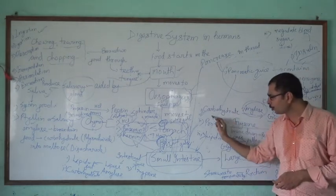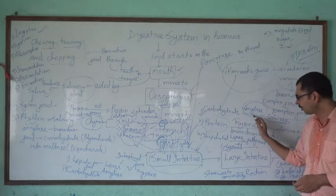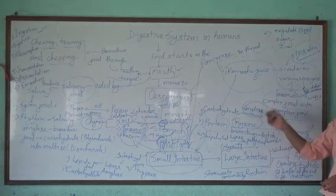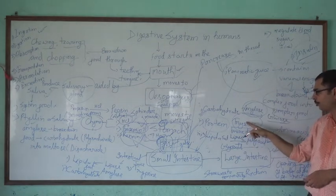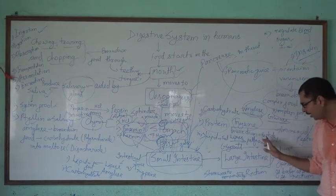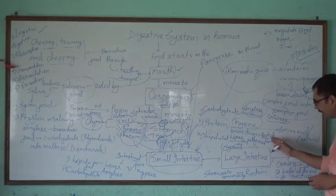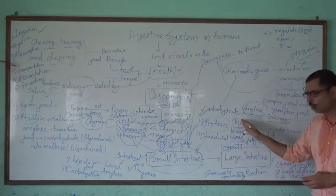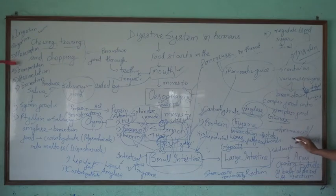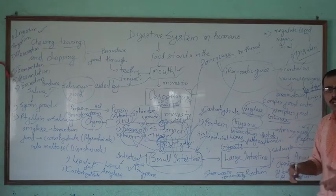Similarly, protein is made up of amino acids. The enzymes that act on proteins are pepsin and erepsin. Pepsin acts in the stomach and erepsin acts in the small intestine. They will break down peptide bonds which connect the amino acids together, converting proteins into amino acids, and these are then used for energy.